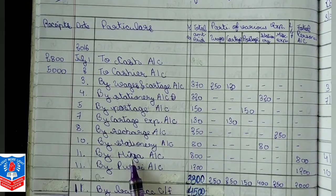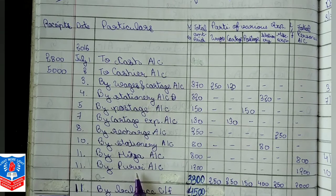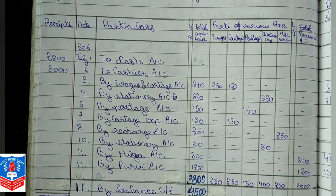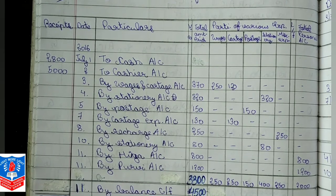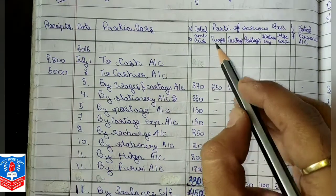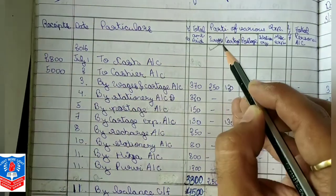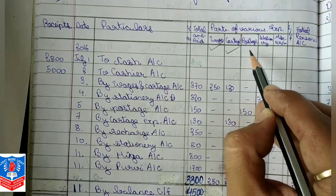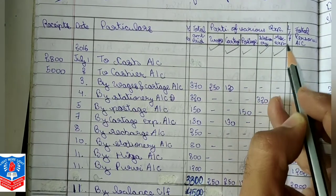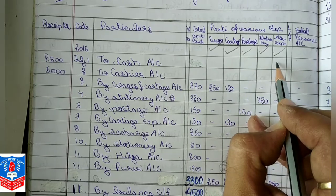Along with that, there are two personal accounts — Hia and Purvi. We will prepare our ledgers accordingly. All the different various accounts will be expense accounts: wages account, cartridge account, postage account, stationery account, and miscellaneous account.